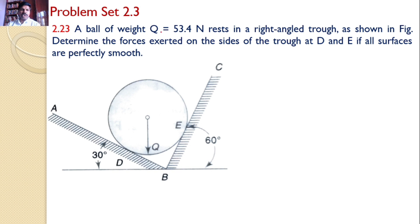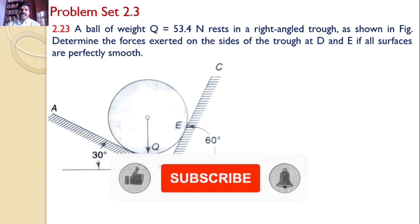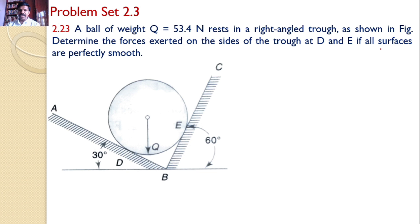A ball of weight Q = 53.4 Newtons rests in a right-angled trough as shown in the figure. Determine the forces exerted on the sides of the trough at D and E if all surfaces are perfectly smooth. Our interest is to find the reactions that are developed at these two supports D and E.